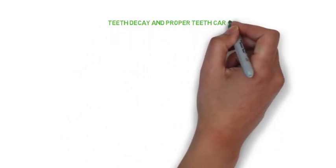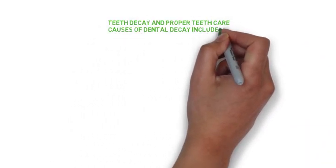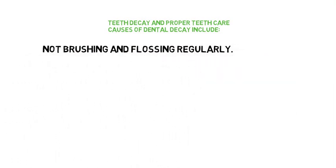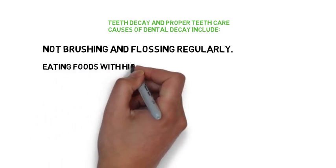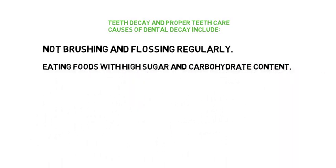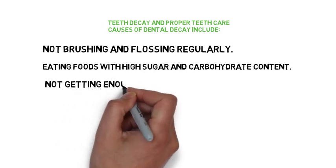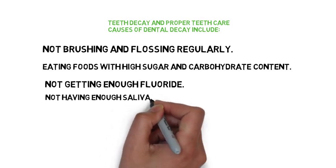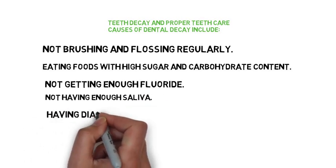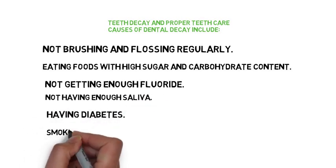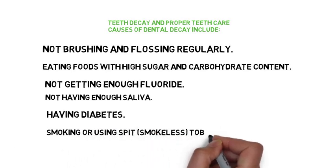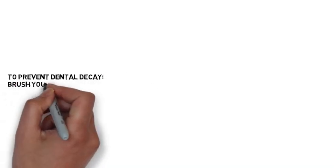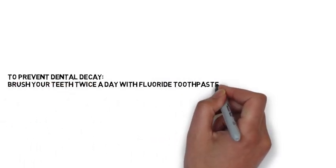Teeth decay and proper teeth care. Causes of dental decay include: not brushing and flossing regularly, eating foods with high sugar and carbohydrate content, not getting enough fluoride, not having enough saliva, having diabetes, and smoking or using smokeless tobacco. To prevent dental decay: brush your teeth twice a day with fluoride toothpaste and floss your teeth daily.